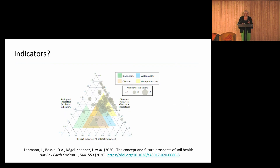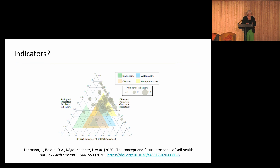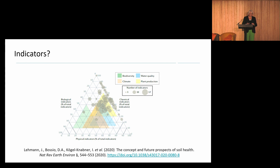This is a really lovely diagram from Lehman et al., a Nature review on the concept and future prospects of soil health. I want to draw your attention to the three axes: on the left we have biological indicators, on the right chemical indicators, and on the bottom physical indicators.